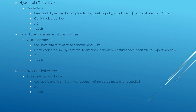Tizanidine is used for acute and intermittent management of increased muscle tone and spasticity. Its adverse effects include drowsiness, dizziness, constipation, dry mouth, and hypotension — which may be significant. The drug can also cause psychotic symptoms including hallucinations. The nurse needs to assess the patient for hallucinations, dizziness, sedation, and cardiovascular status including bradycardia and hypotension.